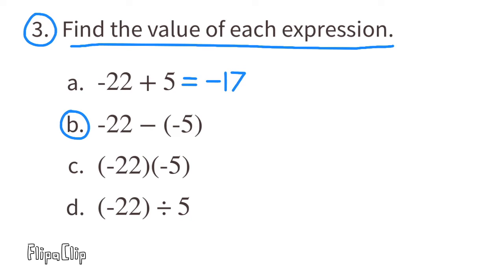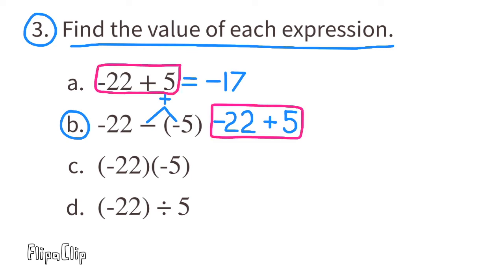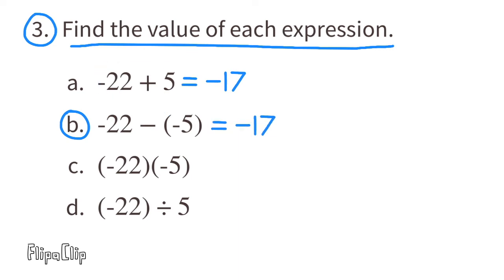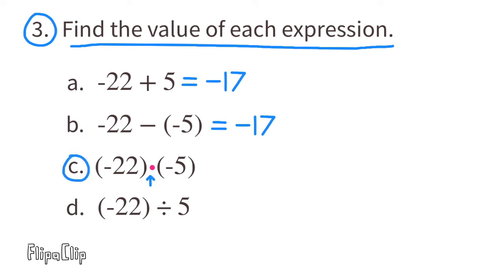Part b: negative 22 minus negative 5. I like to think of this as negative 22 and the opposite of negative 5. The opposite of negative 5 is positive 5, so this expression has the same value as expression a: negative 22 plus 5, which equals negative 17.